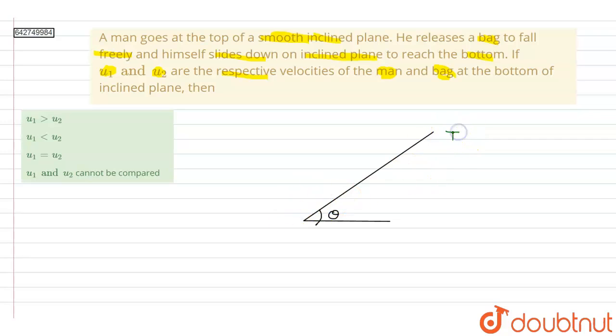Let us say that the height of this incline is h. So the man and the bag, let us say this is the man and adjacent to it this will be the bag, and we have to calculate u1 and u2.